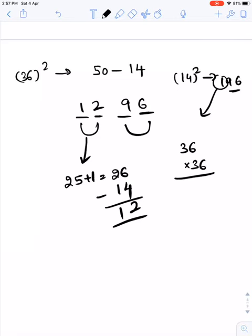So 36 square is 1296. That's it. Thank you.